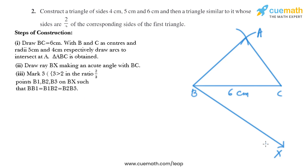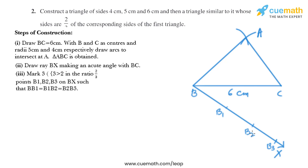In the next step, we have to mark three points on BX — B1, B2, B3 — such that BB1, B1B2, and B2B3 are equal. So we draw B1, B2, B3 like this.